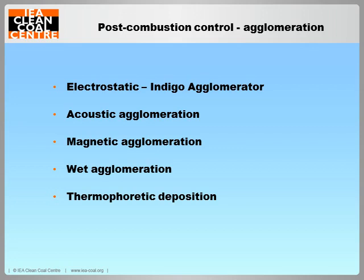Agglomeration can bind fine particles into larger ones, thus making their collection easier. It sounds like a very simple and promising method. However, there are no commercial applications for these technologies at the moment. Indigo Technology of Australia's agglomerator was nearly successful — by 2008 there were eight commercial installations across Australia, the USA, and China. Unfortunately, the company went into liquidation in February 2011. Some experts regard bipolar electrostatic agglomeration with ESP as an alternative to hybrid ESP and fabric filter technology.